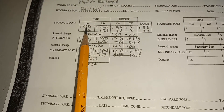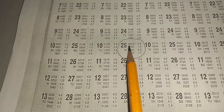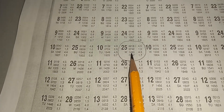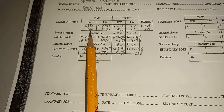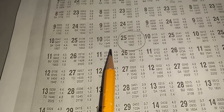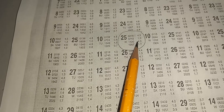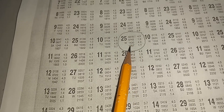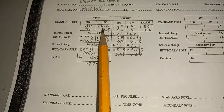Box one: time 0218 and height 4.5. The next high water is 1430 and 4.3. For the low waters, we have 0742 at 1.0 meter and 1957 at 1.1 meter.